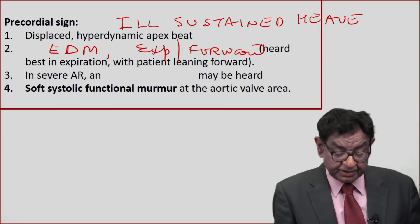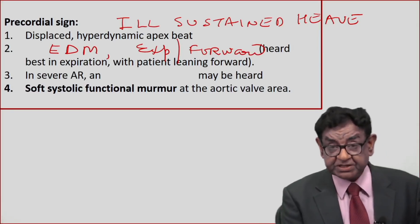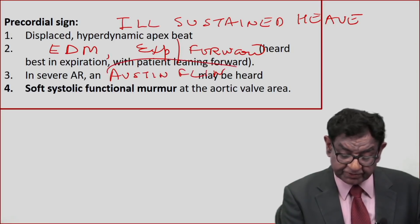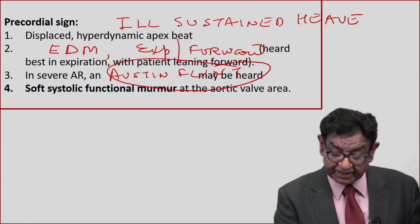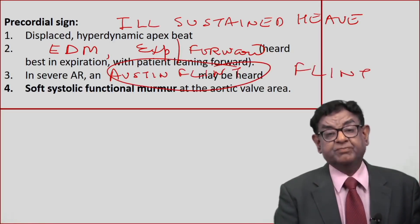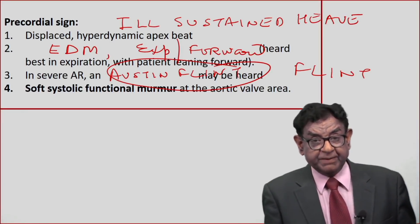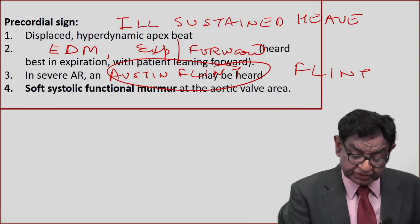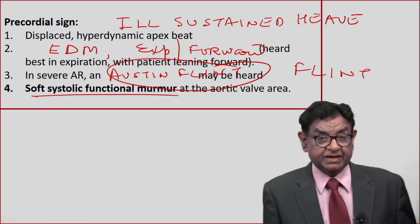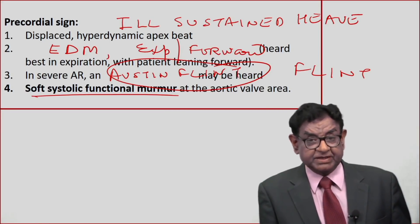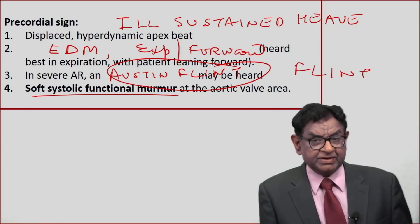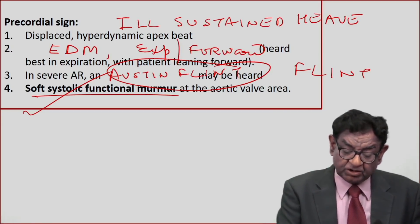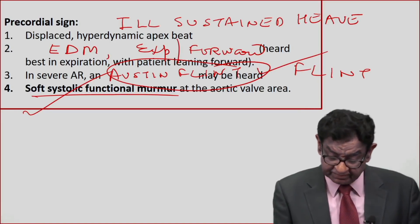In severe AR, you may get a functional murmur called Austin Flint murmur — a very important topic. Remember: all named murmurs are diastolic murmurs. Austin Flint murmur is heard over the mitral area and is functional. There can also be a soft systolic functional murmur in the aortic area mimicking aortic stenosis, but it is functional. So there are two functional murmurs in AR: a soft systolic murmur at the aortic area, and Austin Flint murmur at the mitral area.